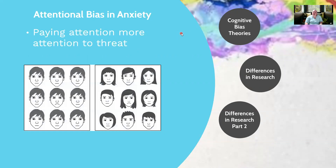So what do we mean by that? Here's a quick example. If we were to show this image to someone or use it in a study, the thought is that someone with anxiety or higher levels of anxiety is going to notice the more negative or threatening face quicker than someone who doesn't have anxiety. And that's kind of what we're talking about here in a nutshell.